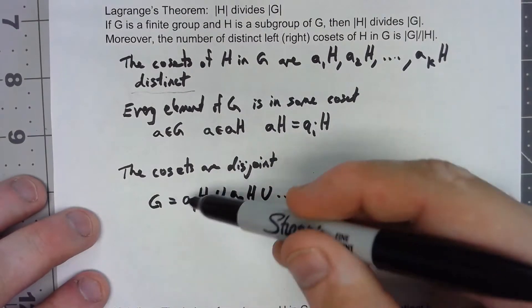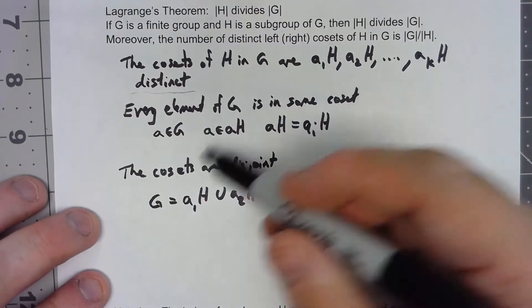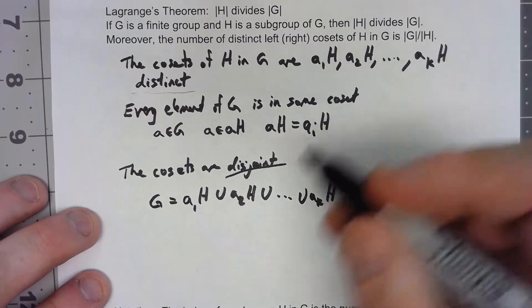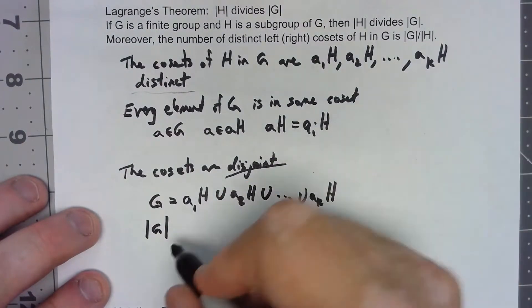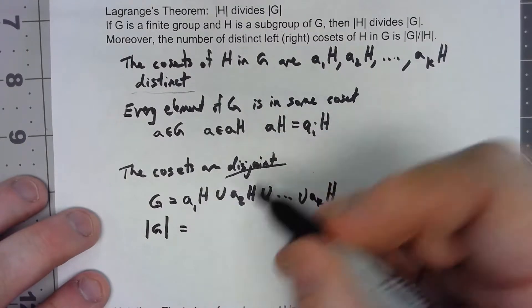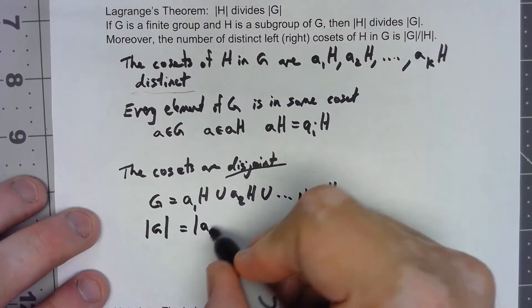Further, since we've got a union of a bunch of things and those things are disjoint, that means that the number of elements in G is equal to the number of elements in a_1 H